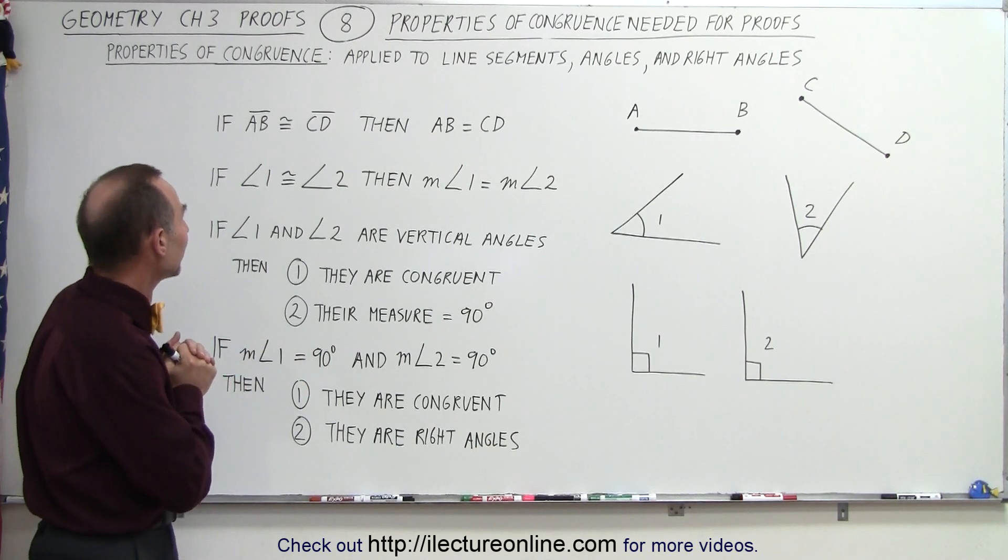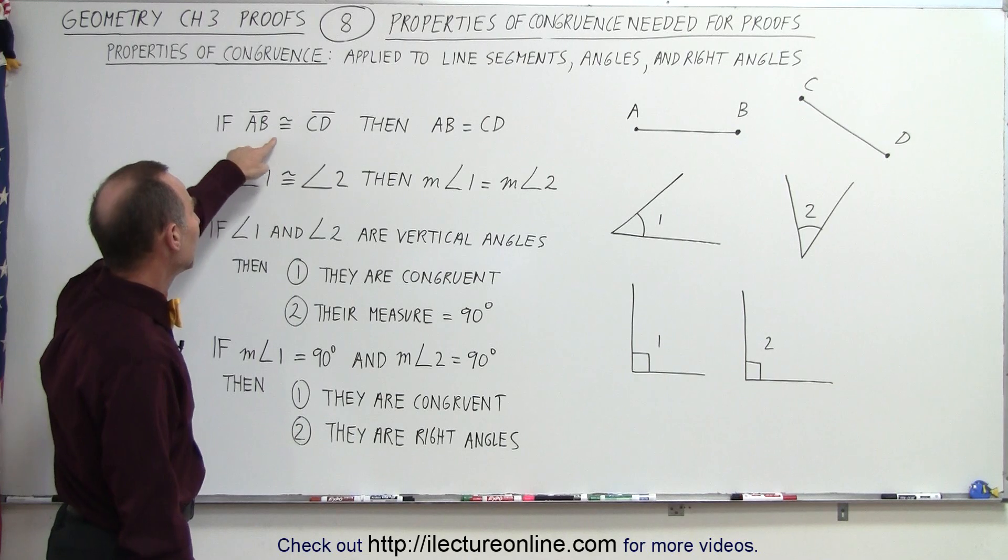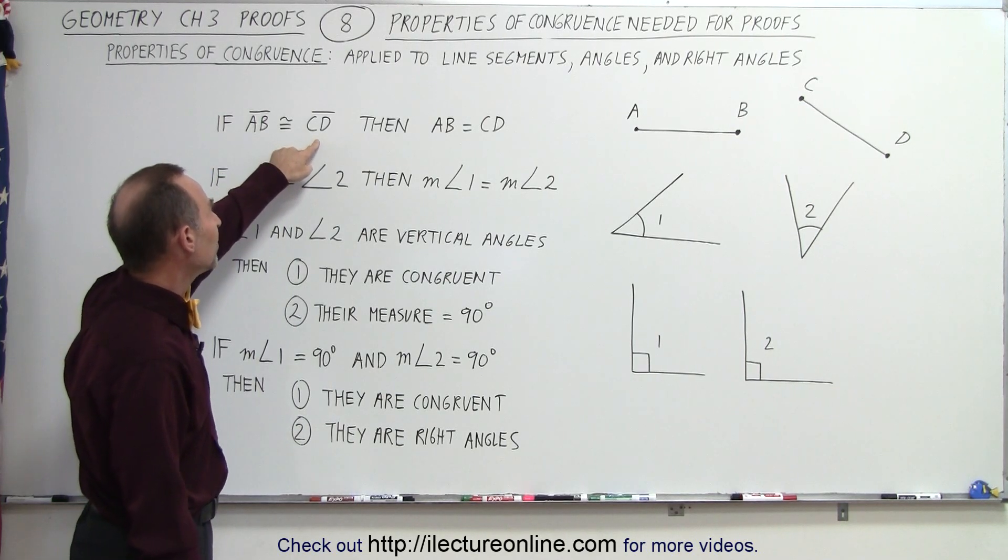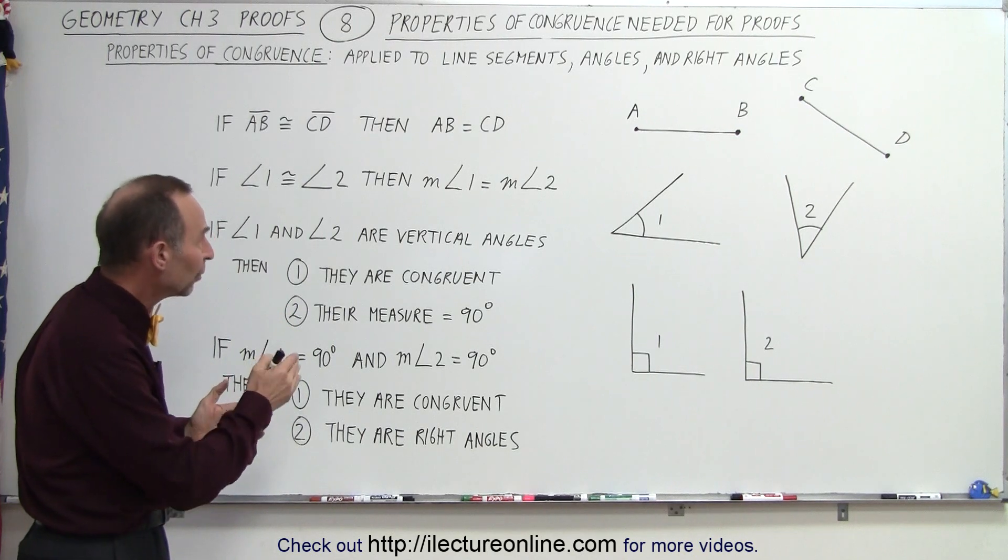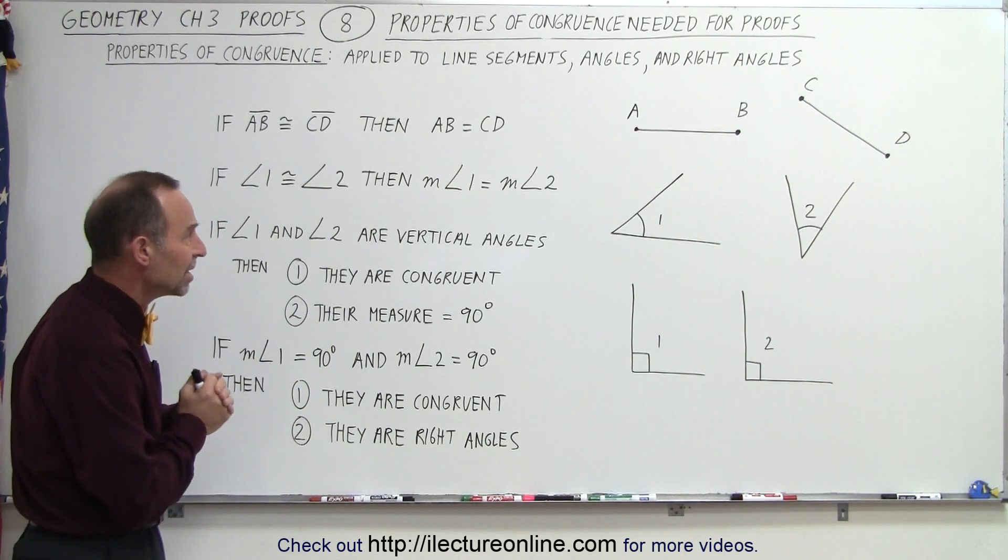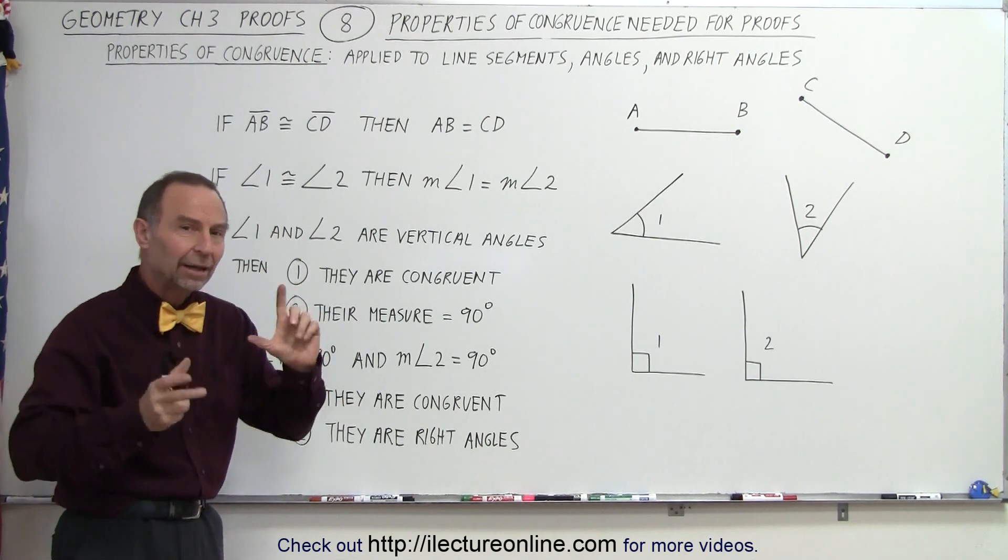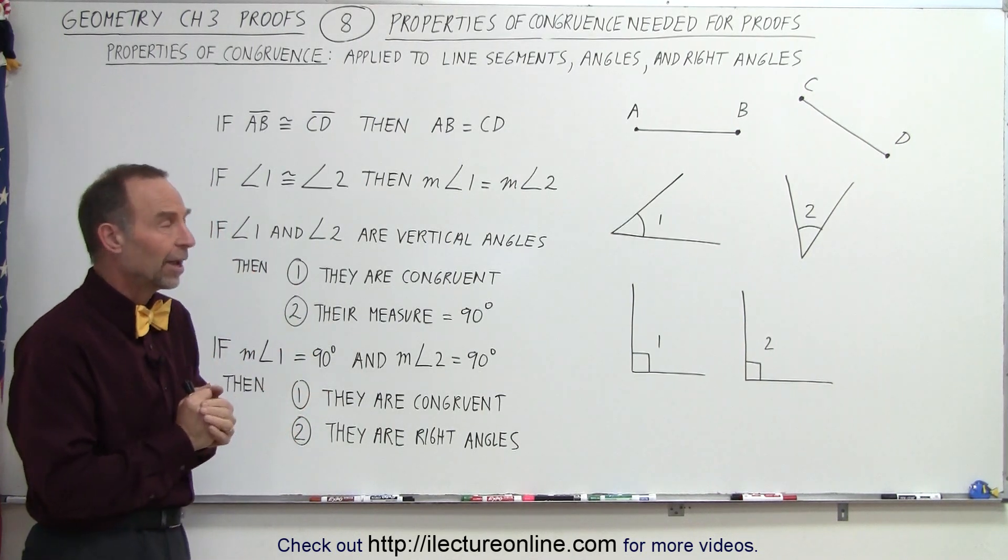First, if line segment AB is congruent to line segment CD, that implies the length of segment AB equals the length of segment CD. It doesn't matter which way the lines are oriented; it simply means their lengths are the same.